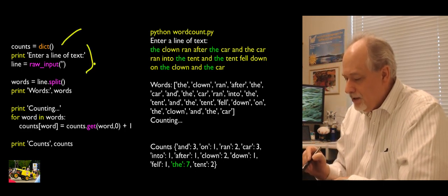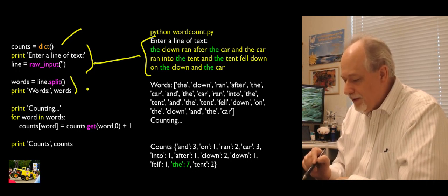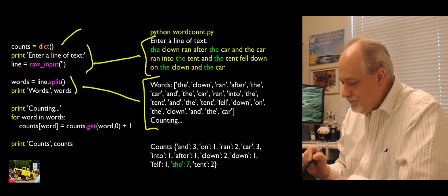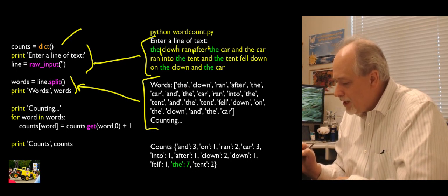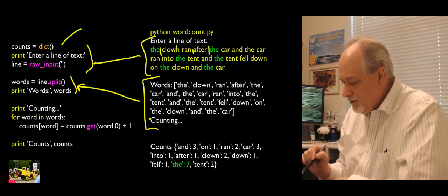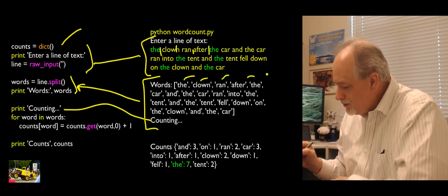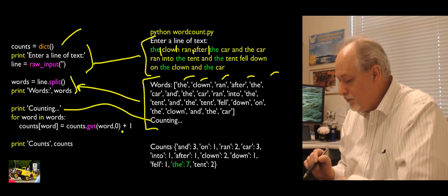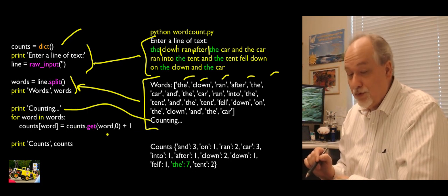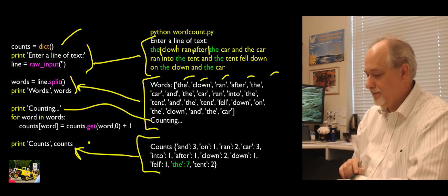In a smaller example: we make a dictionary, enter a line of text, do the split, and print the words out. That split creates a list of strings from a single string based on where the blanks are. Then at counting, we loop through each of the words one at a time and use the idiom — counts sub word equals counts dot get word comma zero plus one — which creates and/or updates. Then we print the counts out.